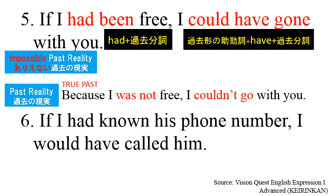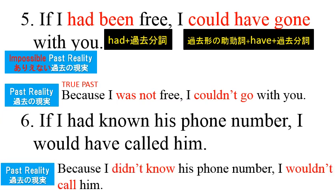Next, let's take a look at sentence number six: if I had known his phone number, I would have called him. The past reality behind this sentence is: because I didn't know his phone number, I wouldn't call him. The verbs used are 'had known' and 'would have called.' This is the 'had plus participle' structure, and the past of the helping verb, plus 'have,' plus past participle.